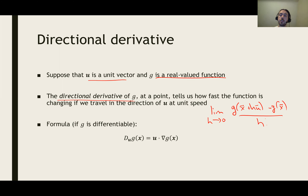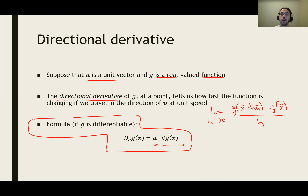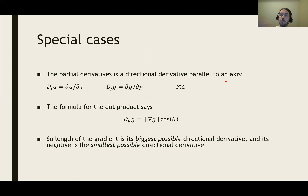The limit definition tells us the slope as we go out along that line in the direction of u. And the chain rule says that the directional derivative is very concrete — it's the dot product of the unit vector u with the gradient of g at x.